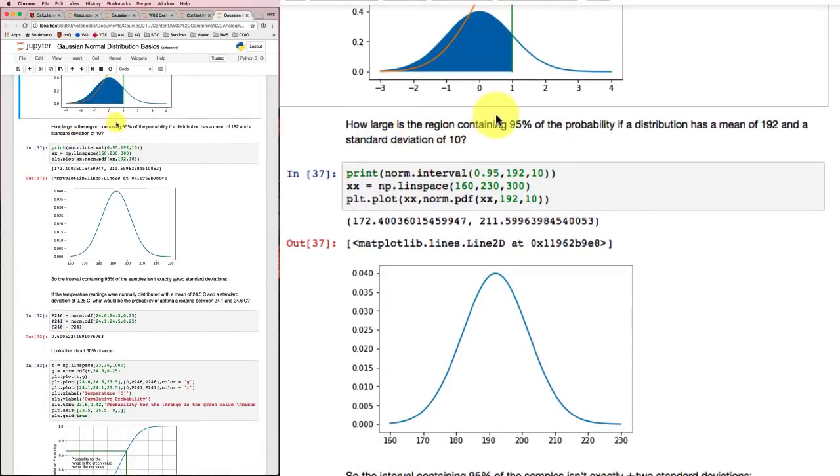For example, how large is the region containing 95% of the probability if a distribution has a mean of 192 and a standard deviation of 10? Well, remember that 95% of the probability lies in between about plus or minus two standard deviations. So 192 minus 10 would be 182, minus two standard deviations would be 172 and plus two standard deviations would be 202, 212.